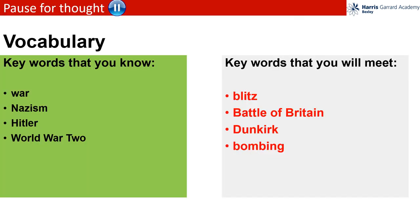Let's have a look at your vocabulary for today. In the green box we have words that you should know: war, Nazism, Hitler, World War II. And over in the grey box we have words that you'll meet today: Blitz, Battle of Britain, Dunkirk, Bombing. Pause the lesson and take a note of these words, as by the end of our unit you will then have a mini glossary of words that relate to our learning of World War II.